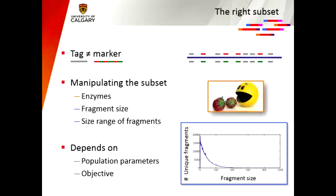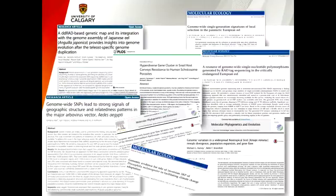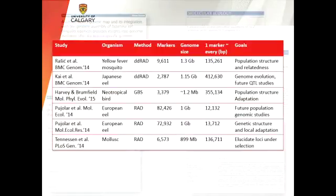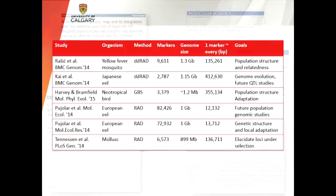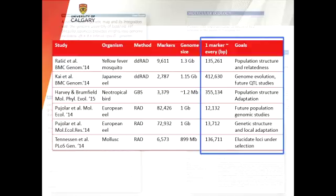The right subset also depends on the objective of your study. Looking at papers using the double-digest RAD approach or similar methods, the key comparison is marker density — the spacing between two markers. If you have a less dense marker map, results are generally used for population studies; if you have a more dense marker map, you can use it as I am to elucidate loci that are actually under selection.